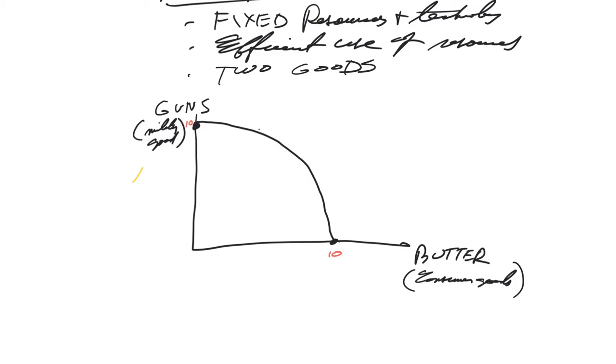Before we go on, pick a different color. That point right there, let's call that point A. That is inefficient. Because at point A, we're producing this many butter and this many guns. That's less than we're capable of producing. So anything inside the curve is inefficient. We can produce, if we're producing this many guns, we're capable of producing that many butter. Or if we're producing this much butter, if we used our resources efficiently, we could produce that many guns. So anything inside doesn't work.